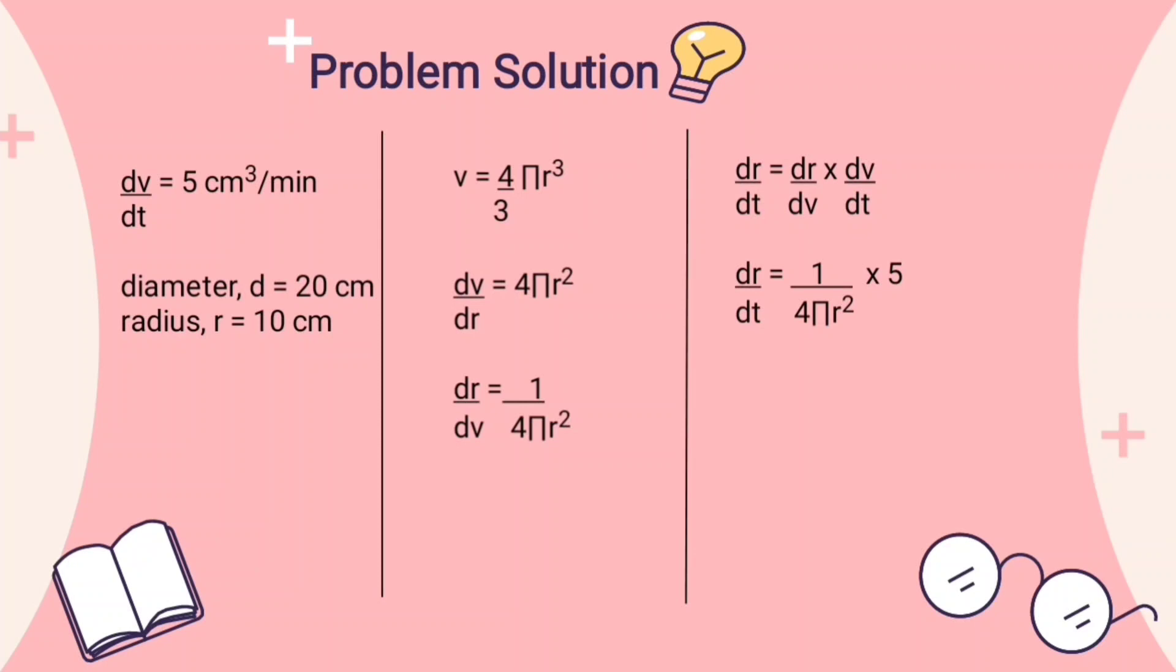So, dr/dt with the radius equals to 10 cm is 1/(4πr²) times 5, and the answer is 1/(80π) cm per minute.